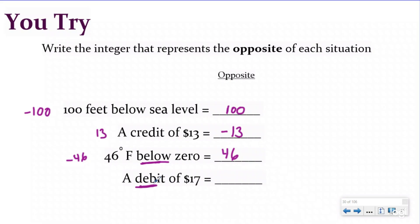And then here we have a debit of 17, which is going to make this a withdrawal of 17, a negative 17. So I'm taking money out and the opposite would be a credit of 17 or a positive of 17. So going back and just reviewing some of our real world situations that we're going to have to deal with negative numbers later in our lessons.